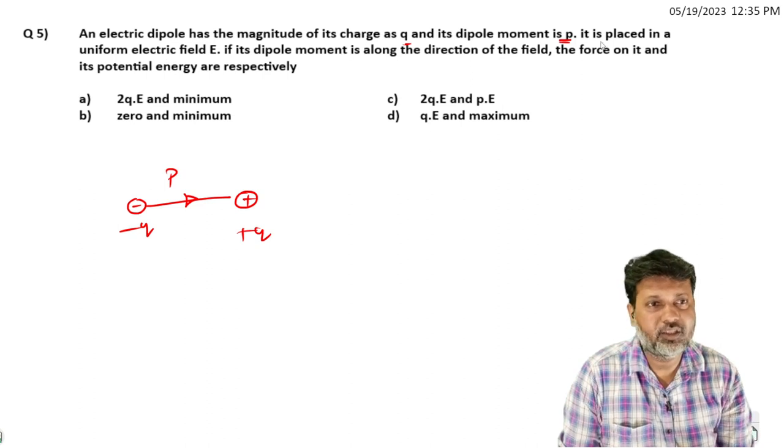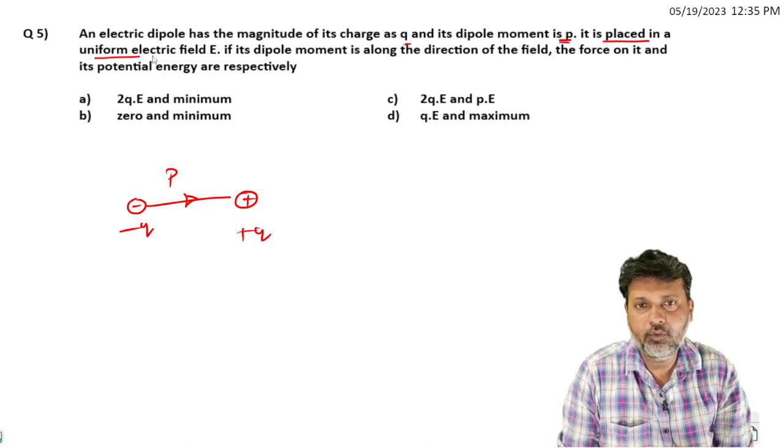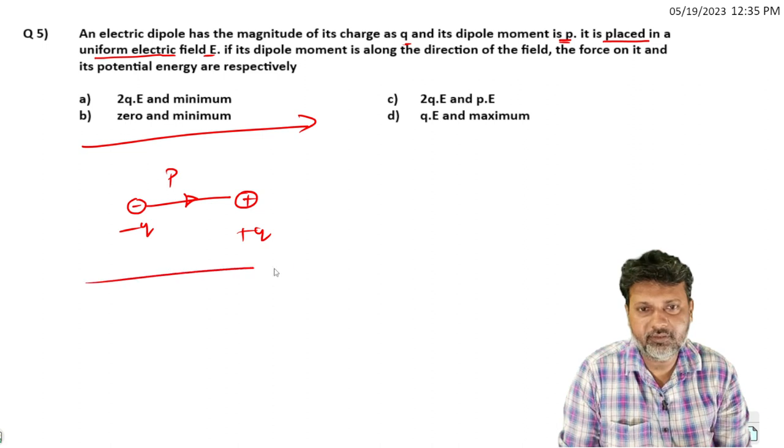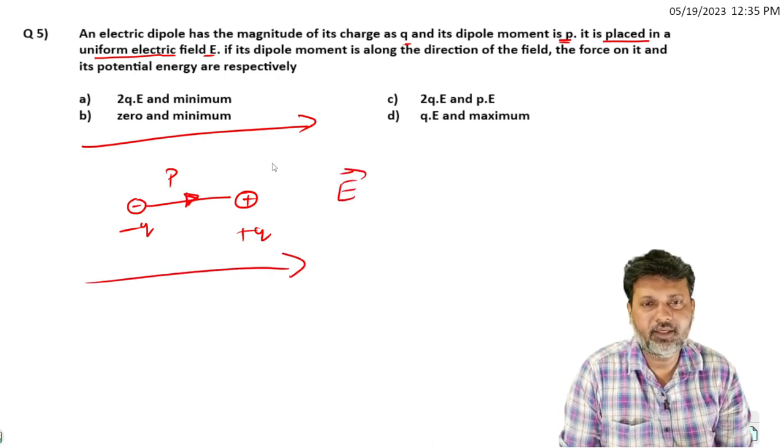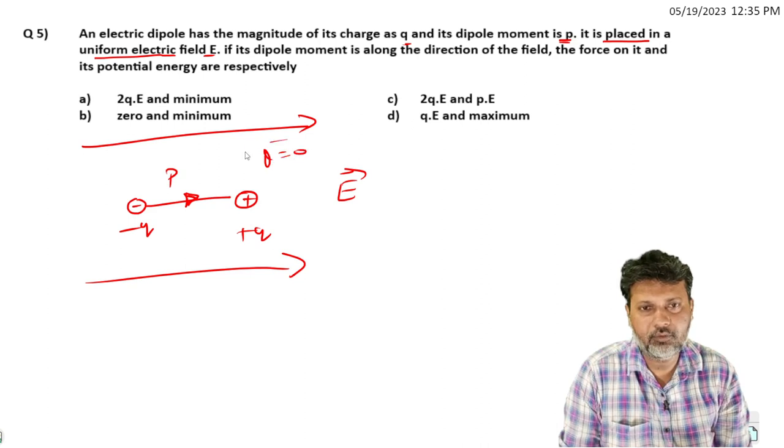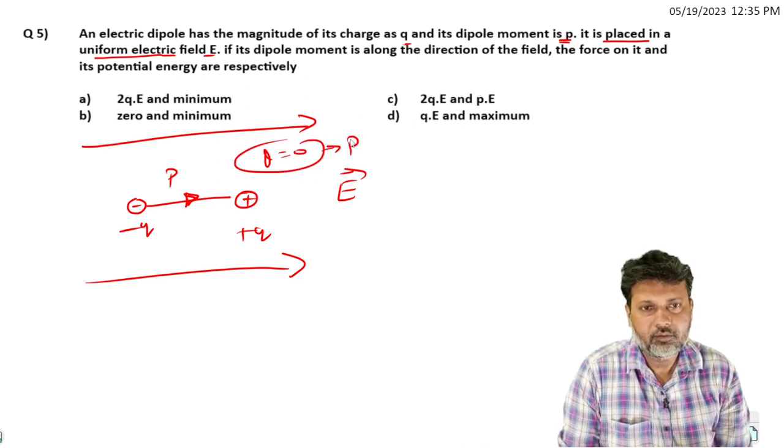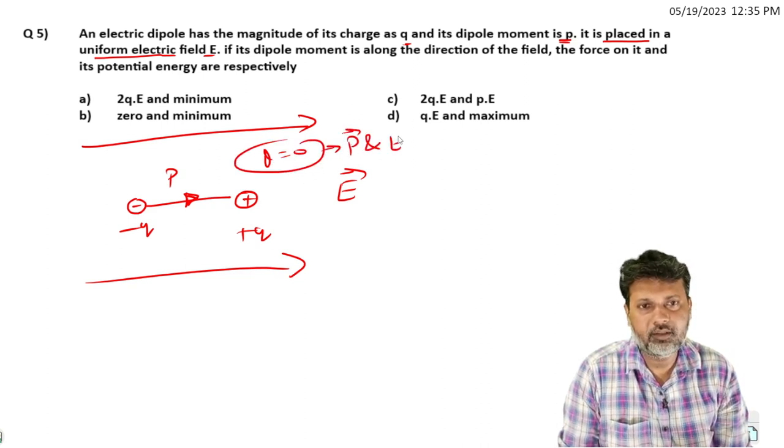It is placed in a uniform electric field in the direction of the electric field. The electric field direction and dipole moment direction are the same. So the angle between p vector and E vector is zero degrees.